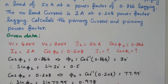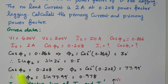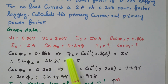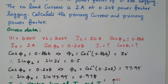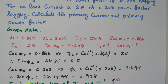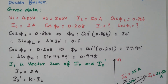We have cos φ2 and cos φ0 available. From these we can find φ2 and φ0. Cos φ2 = 0.866, so φ2 = cos⁻¹(0.866) = 30 degrees. Similarly, cos φ0 = 0.208, so φ0 = cos⁻¹(0.208) = 77.99 degrees. From that, sin φ0 = sin(77.99°) = 0.978. So we have φ2 = 30°, φ0 = 77.99°, and sin φ0 = 0.978. Using these values we can draw the vector diagram.